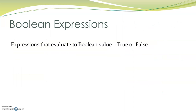Expressions that evaluate to a boolean value, that is either true or false, are called boolean expressions. Using relational operators, we can form such expressions. For example, a greater than b either returns a value true or false, and thus such an expression formed using a relational operator is called a boolean expression.